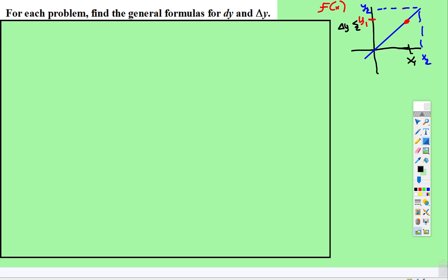Okay, for each problem find the general formulas for dy and delta y. I just want to refresh your brain because sometimes all this terminology and notation in calculus can be confusing or overwhelming if you don't feel very fluent with it.